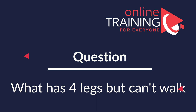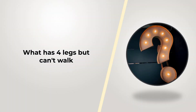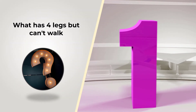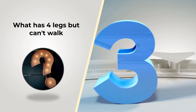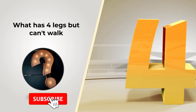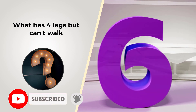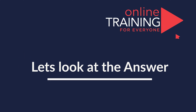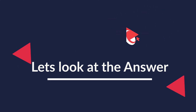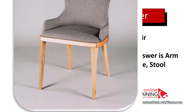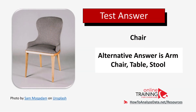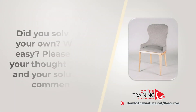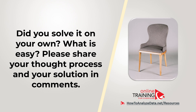Here is a question that tests your understanding of the English language, your vocabulary, and your logical reasoning: what has four legs but can't walk? Think out of the box — not necessarily something that walks. The answer is a chair, and alternative answers could be an armchair, table, or stool. Hopefully you figured it out and now know how to answer similar problems on the test.